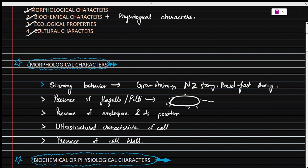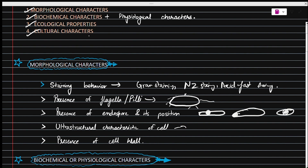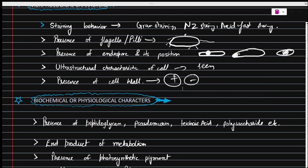Then comes the presence of endospores along with their position. Endospores can be present in various positions — they can be positioned towards the terminal, central, or other places. The ultrastructure of the cell refers to how the bacterial cell appears under the electron microscope. Finally, the presence or absence of a cell wall also determines the morphological character of that particular organism.